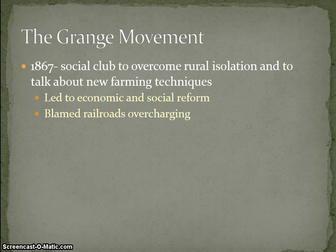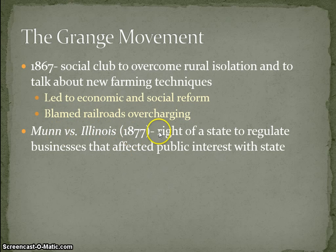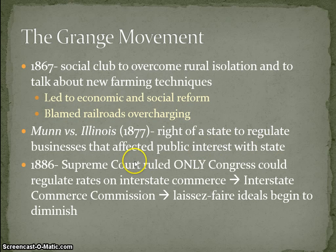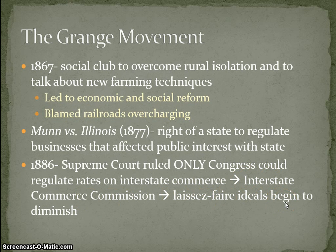The Grange Movement started as a social club where farmers could come and talk to each other, since rural isolation meant they were 160 acres apart. They blamed the railroads for overcharging. In Munn v. Illinois in 1877, states gained the right to regulate businesses affecting public interest. Then in 1886, the Supreme Court ruled only Congress could regulate rates on Interstate Commerce — hence the Interstate Commerce Commission — and laissez-faire ideals began to diminish.